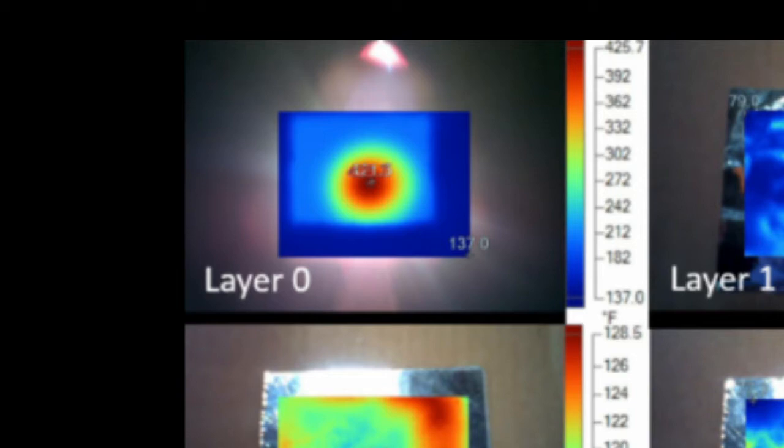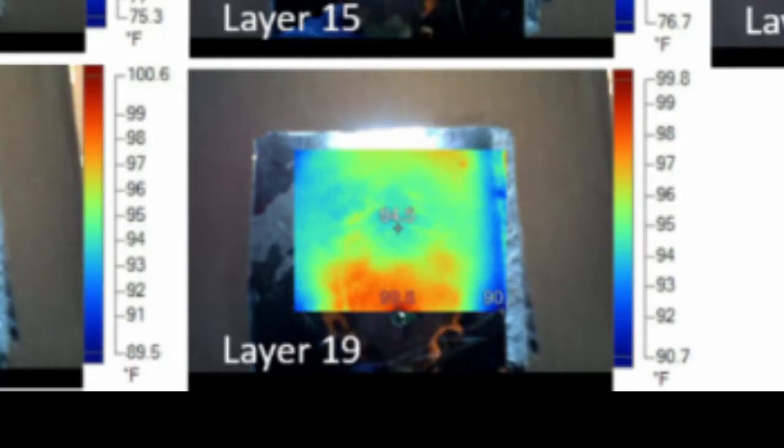On just the heat lamp, the hottest part of the photo was above 400 degrees Fahrenheit, but on the last photo and layer, the hottest was 99.8 degrees, over 300 degrees cooler.